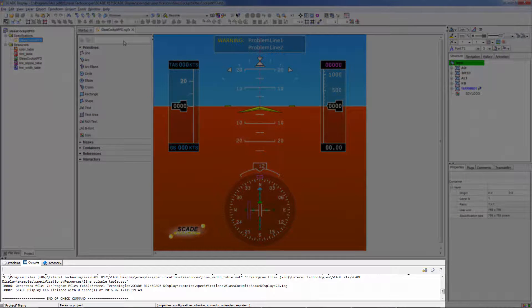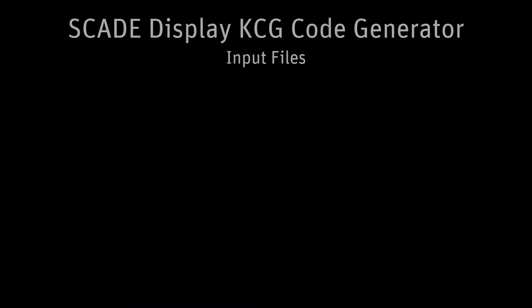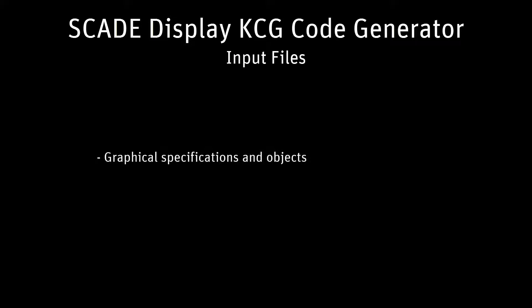SCADE Display KCG is the code generator used to generate graphical code directly from the formal specification defined with SCADE Display. The input files of KCG are the graphical specifications and objects, with SGFX, OGFX, and PGFX extensions.